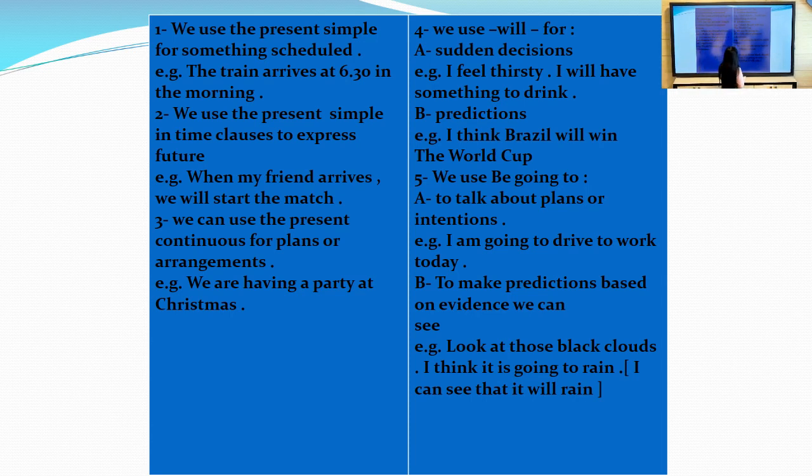First one: we use will for sudden decisions. Will plus base form and be going to are the most common forms of future. We will use will for sudden decisions, immediate decisions. For example, I feel thirsty, I will have something to drink. I don't have much time to decide to drink water. I feel thirsty, I will have something to drink. This is an immediate or sudden decision.